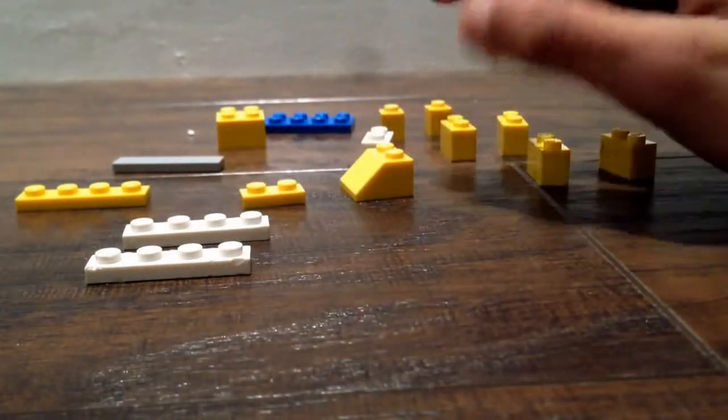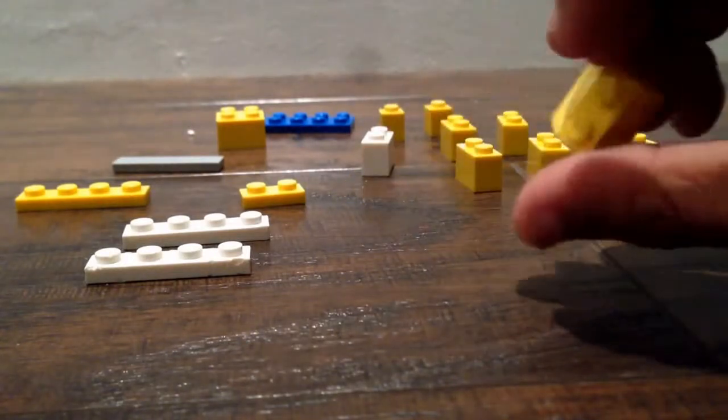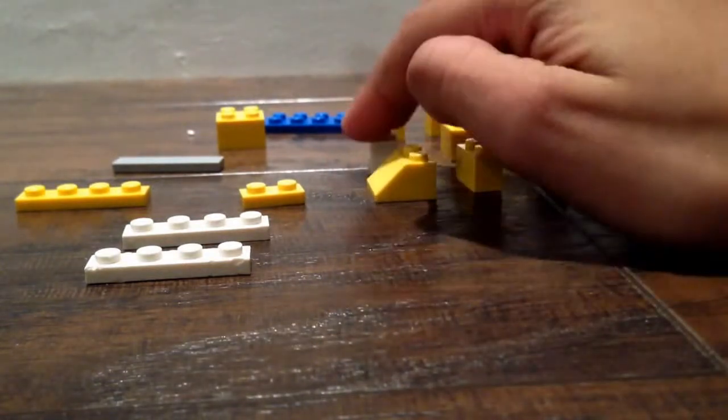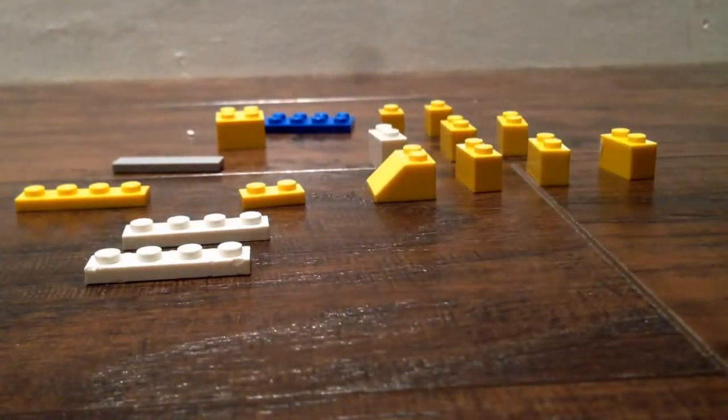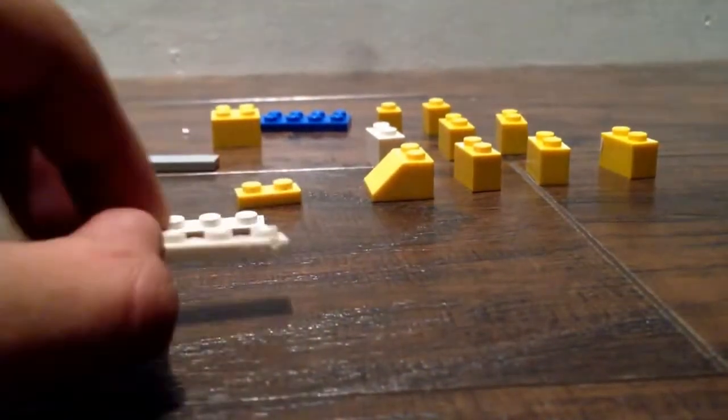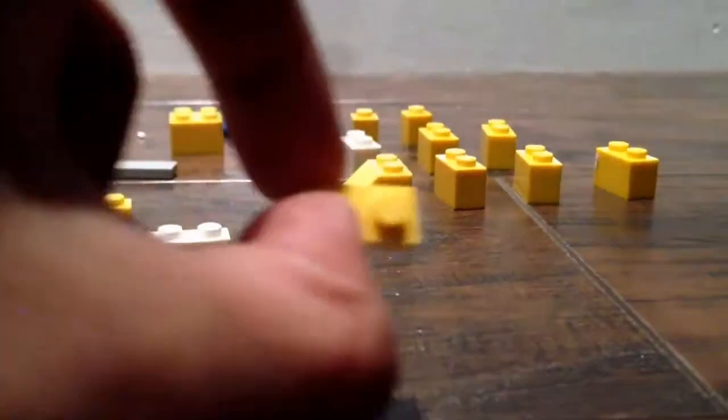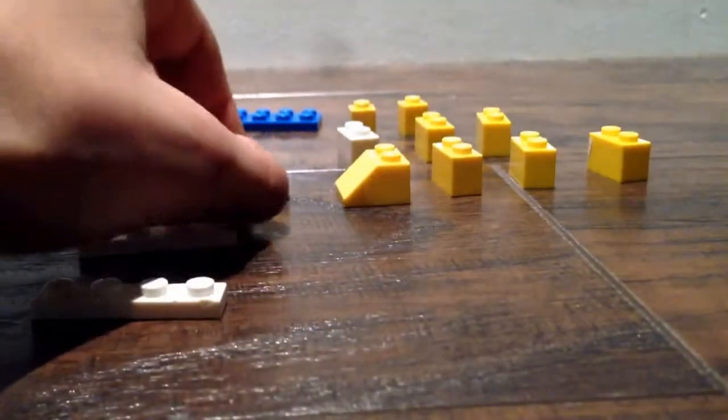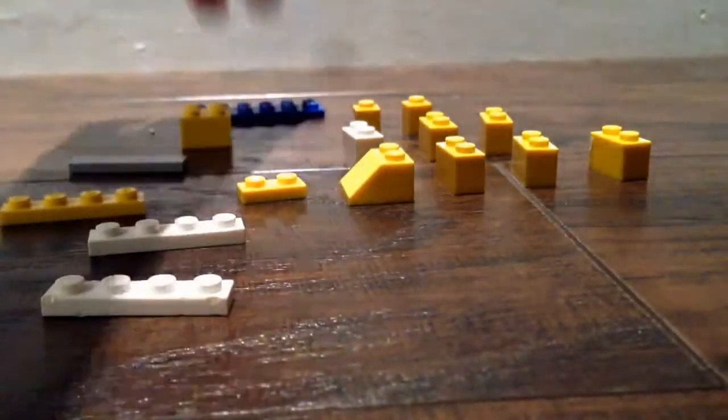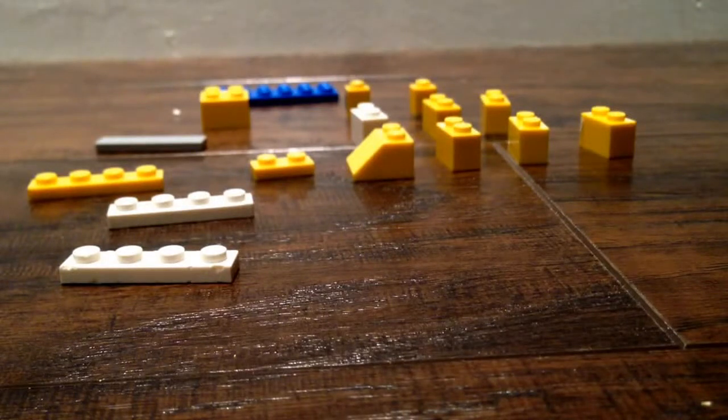Then you're going to need one 2x2 triangle plate thing, I don't really know what this is called. Then you're going to need a 1x4 plate and two 1x4 plates, two 1x2 plates, and a 2x6 plate.